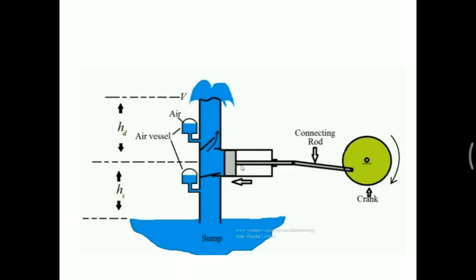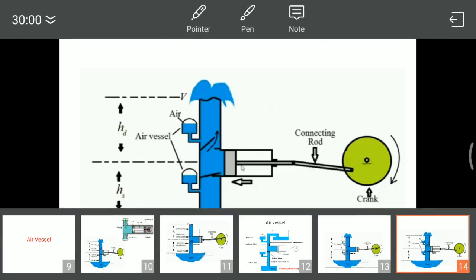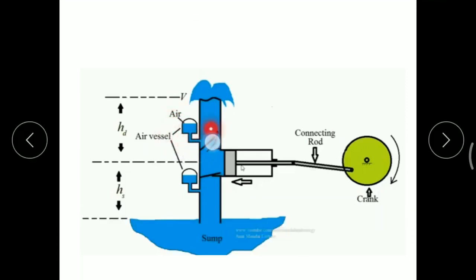When excess water flows from the delivery chamber into the air vessel, the amount of water increases and at the same time the air present in the air vessel gets compressed. At the end of the stroke, this water flows out of the vessel to keep the discharge more uniform.